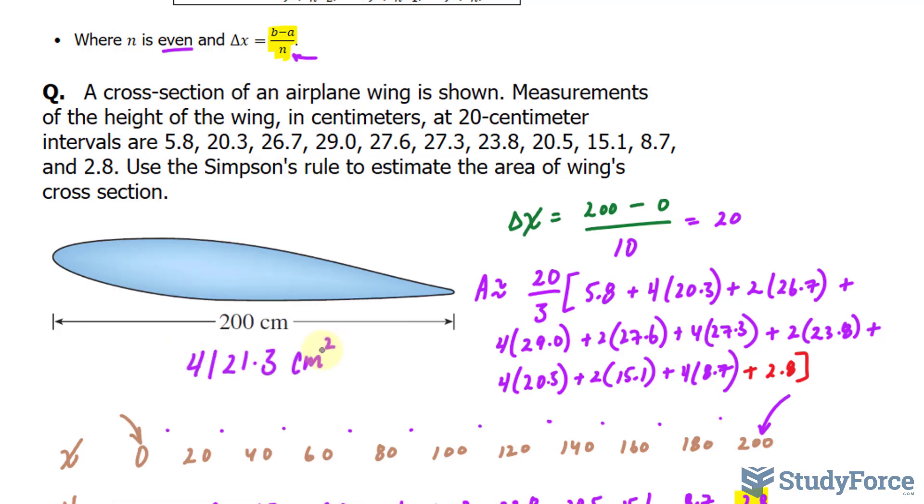I mean, given that this is an airplane wing, the fact that this number is large in magnitude shouldn't be questioned. So it's likely that we did the calculations right. And with that being said, that is how to find Simpson's rule of an irregular shape such as an airplane's wing.